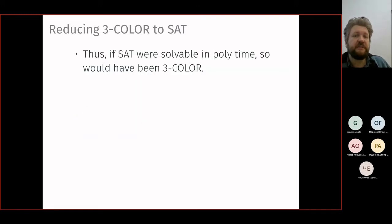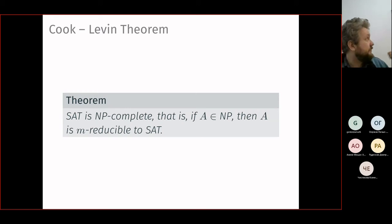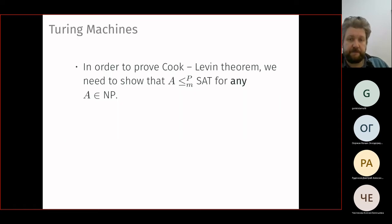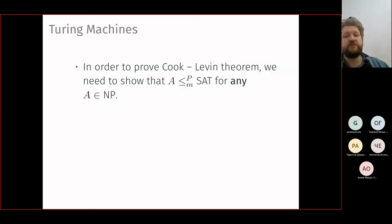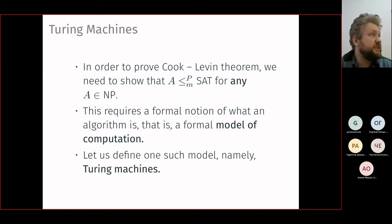The Cook-Levin theorem says that if A is in NP, then A is many-one reducible to SAT for any problem A. Last lecture we proved that three-colorability specifically is reducible to SAT, but now we show it for any NP problem. We need to show that A reduces to SAT for any A in NP, and we use the formal model of Turing machines for this.